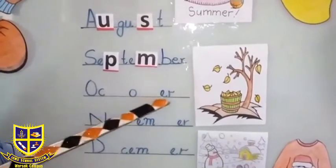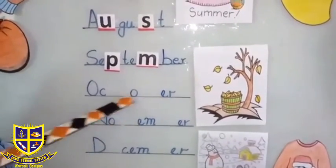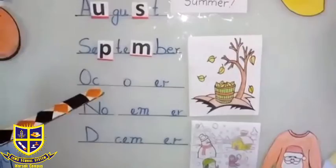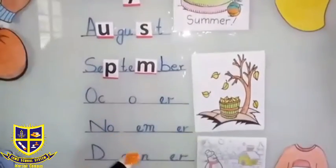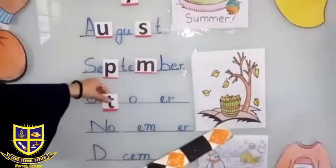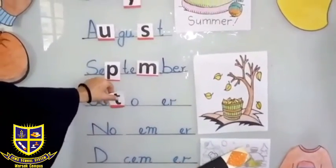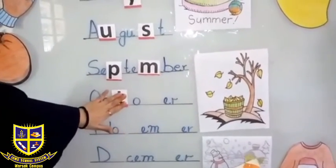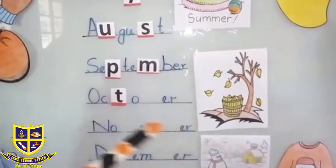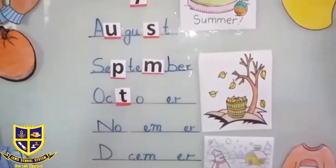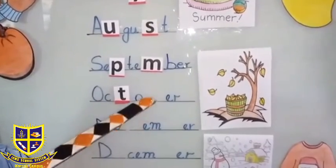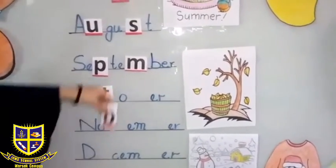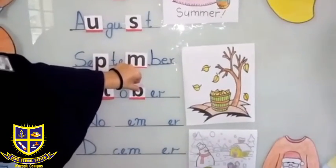October. October. October — which letter is missing? T is missing. T. October — B is also there. October.